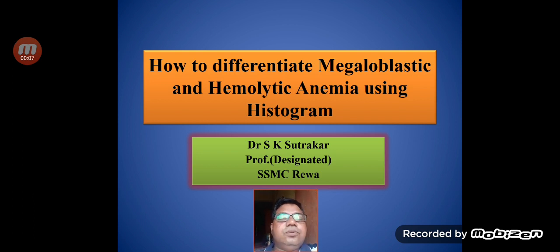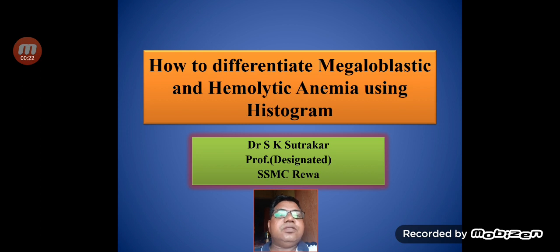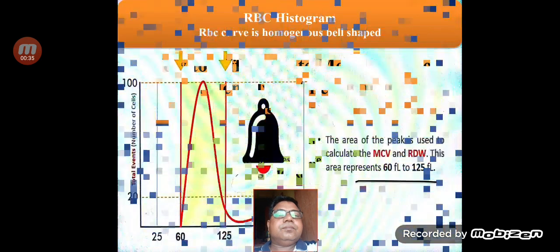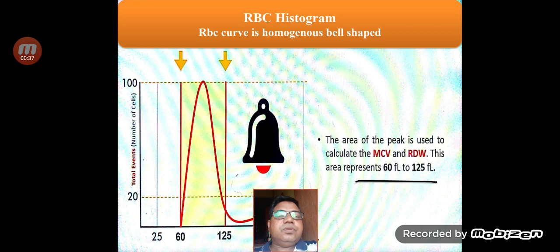Good morning friends. Today we will discuss how to differentiate megaloblastic anemia and hemolytic anemia using histograms. I am Dr. S.K. Sutrga from the department of pathology. This is a typical challenge for pathologists — to differentiate these two conditions without seeing the smears. Here we will discuss how we can easily distinguish or differentiate these two conditions with the help of histograms.